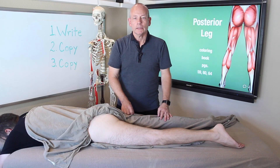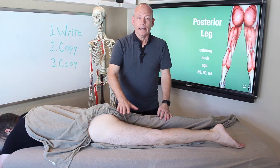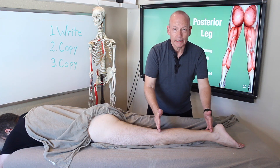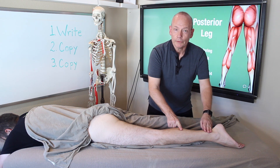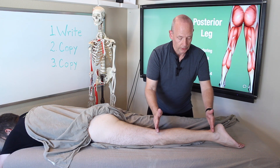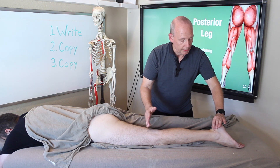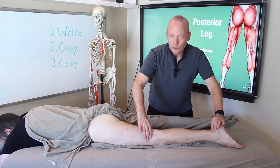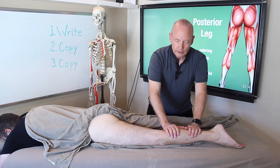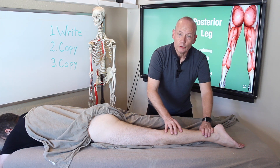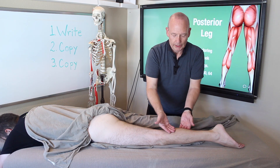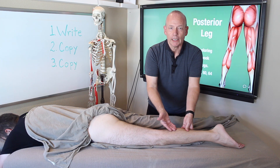The muscles of the posterior leg — that is, the back of the leg. Our first muscle is gastrocnemius. It is the most superficial muscle of the posterior distal leg. It runs from the ankle or the Achilles tendon to just above the knee, the femur — that's where it attaches. Deep to gastrocnemius is the soleus.